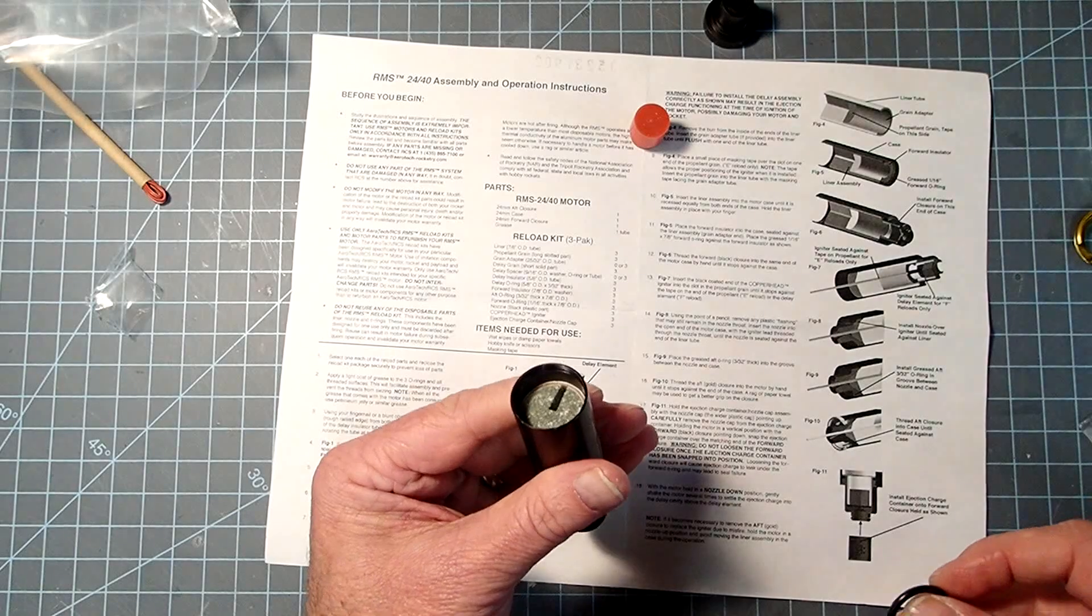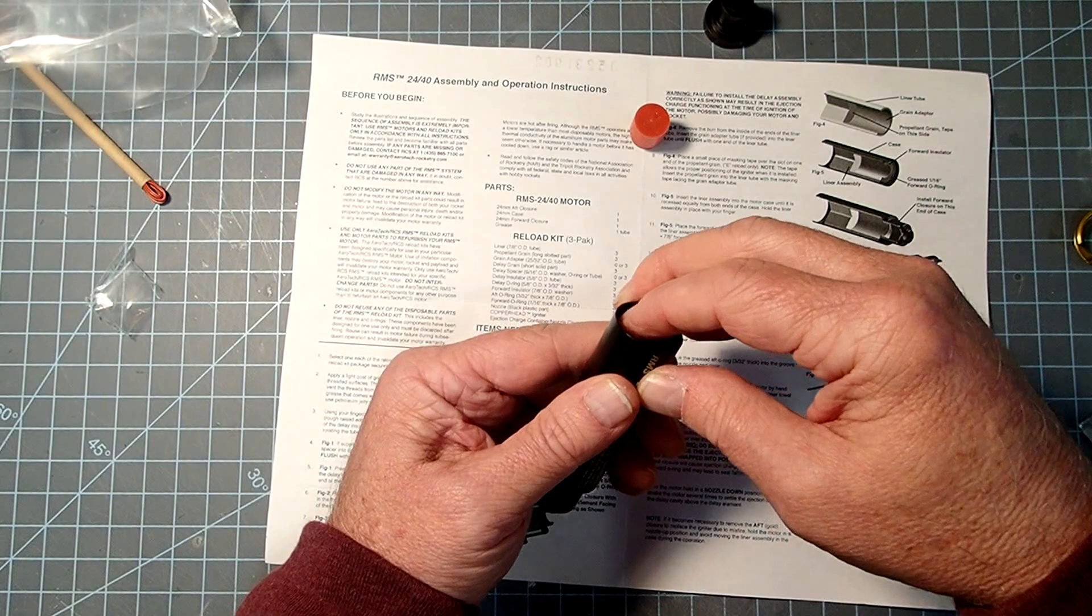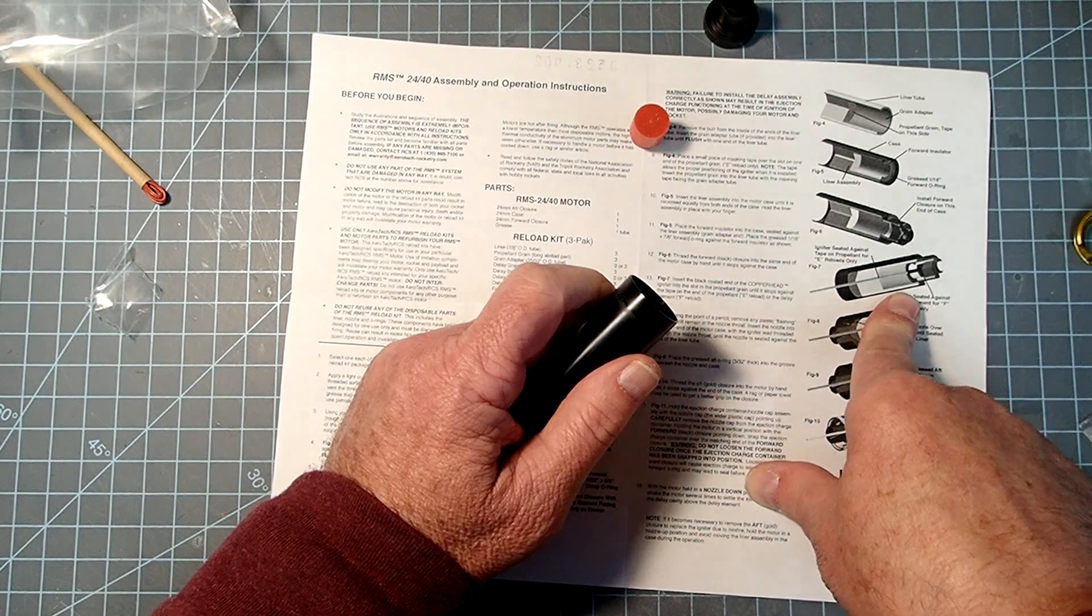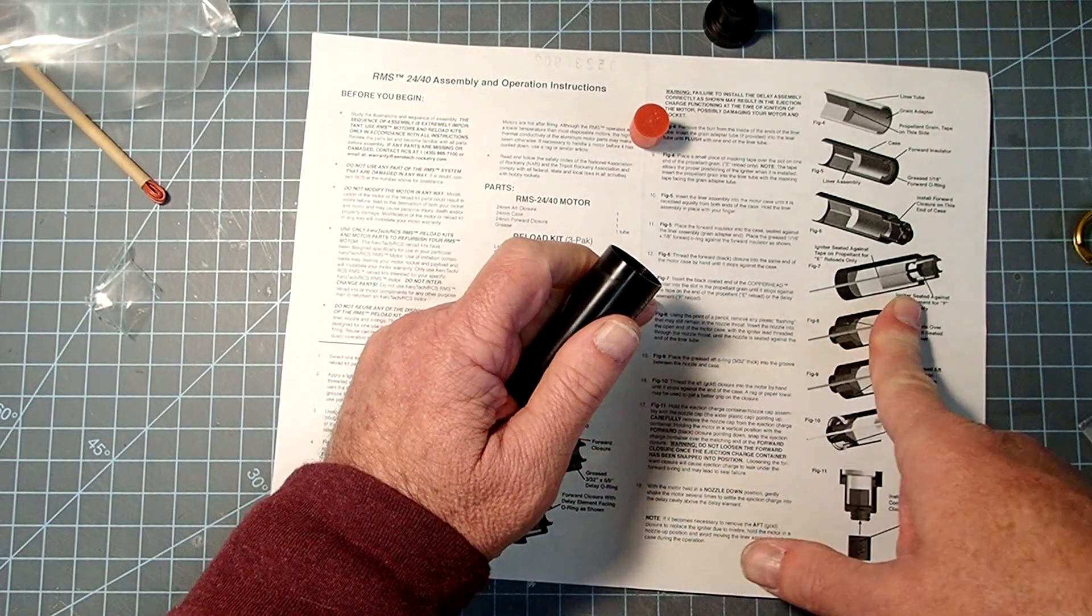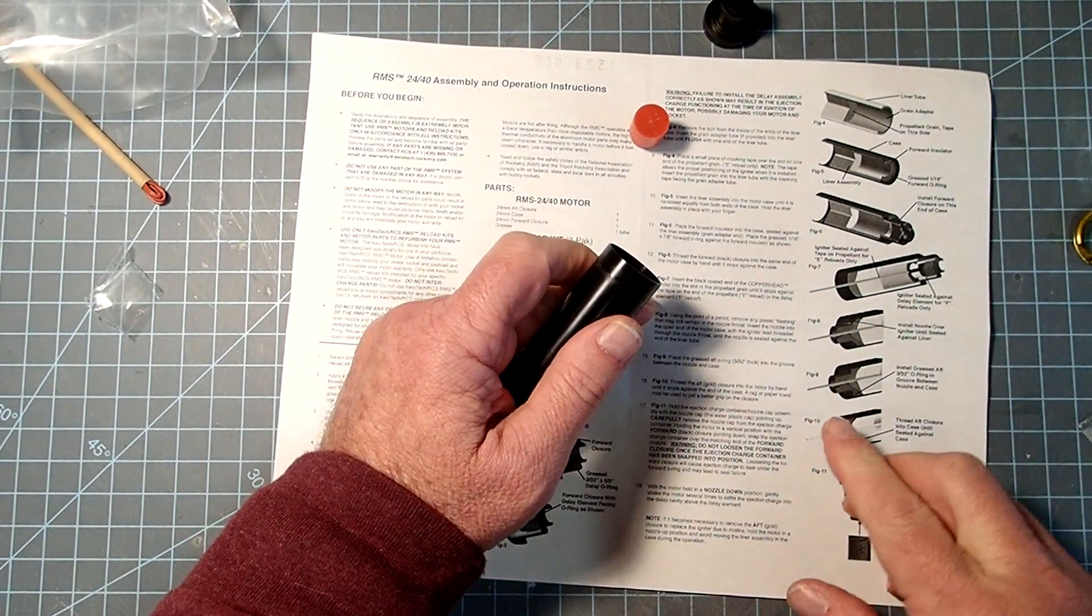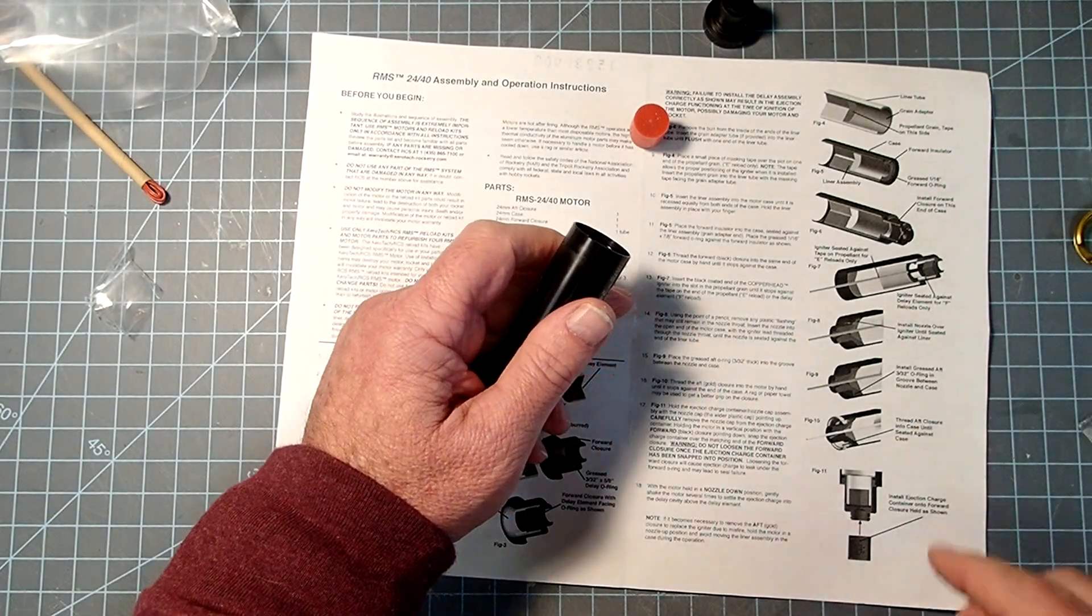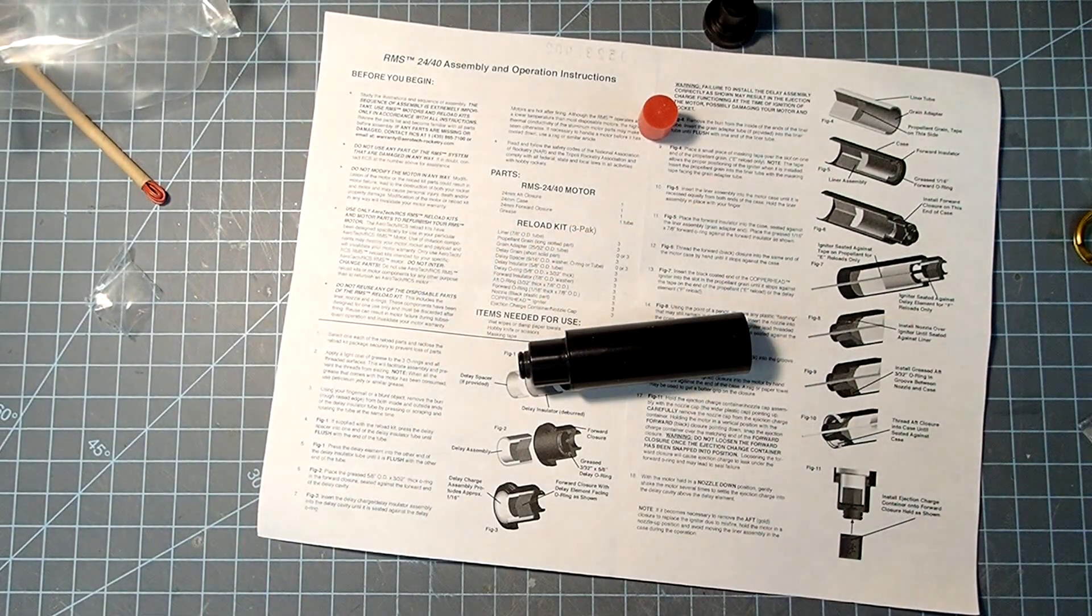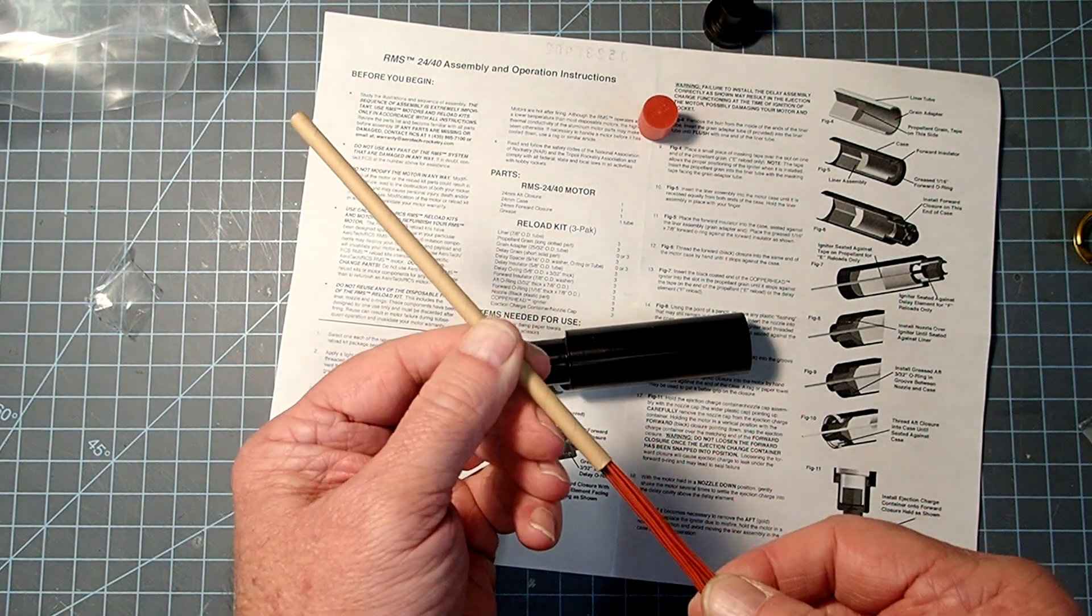Now we're going to add the aft O-ring. Something to be aware of: they're actually putting the igniter in first. And that is allowable with mid-power rocket motors. It's not allowable with high power. High power, you should always load the igniter when it's on the pad. But in some cases, the head of the igniter is too thick to pass through the nozzle. So, we'll just go ahead and pull one of our igniters out here.